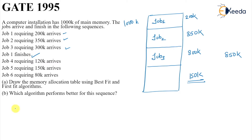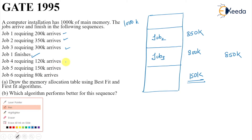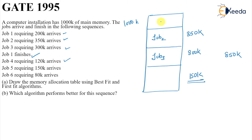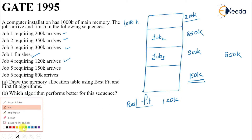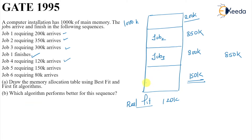Job one finishes, so we free that 200k space. Now job four arrives with 120k. Applying best fit strategy: the best fit for 120k is the freed 200k space. So we allocate 120k there, leaving 80k in that hole.